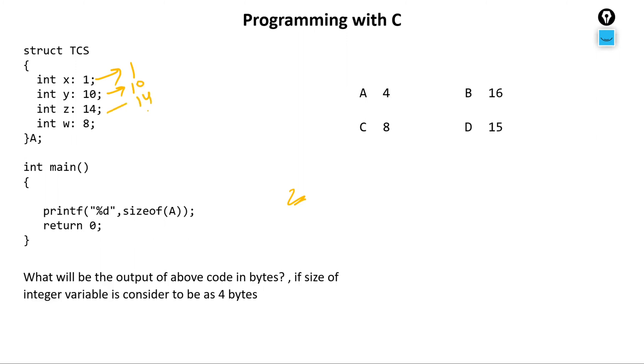X is taking 1 bit. Y is taking 10 bits - that's 11 bits. 11 and 14 is what? 25 bits. And 25 and 8 is what? 33 bits. Now can I store this 33 bits in 4 bytes? What is 4 bytes? 4 bytes is 32 bits. So can you insert 33 in 32? No.